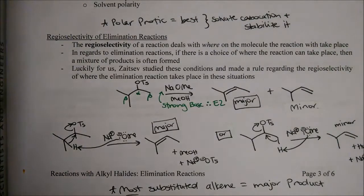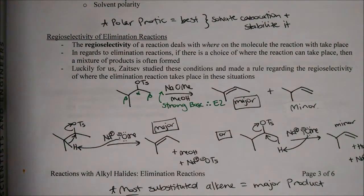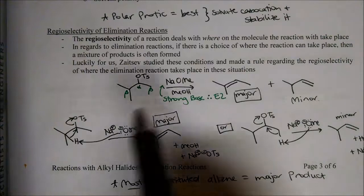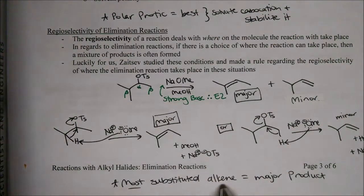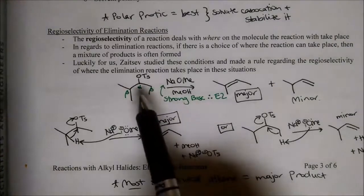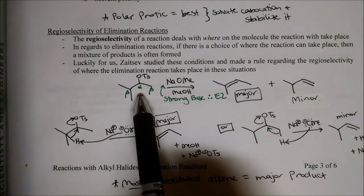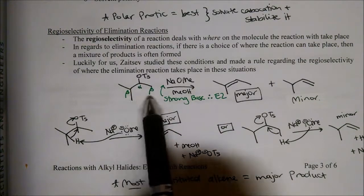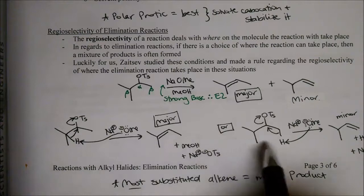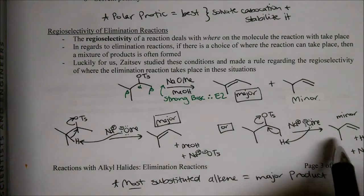The last thing we talked about on Wednesday was Zaitsev's rule, which deals with the regioselectivity of the elimination reaction. Zaitsev studied these reactions and determined that the most substituted alkene is the major product. This happens when we have an alpha leaving group with two beta carbons - when we eliminate, we can take a hydrogen from either of those beta carbons, and it's the most substituted alkene that's going to be the major product.